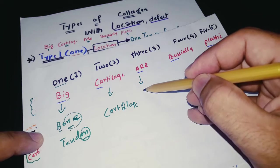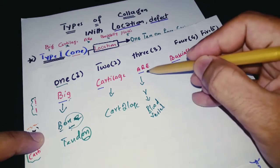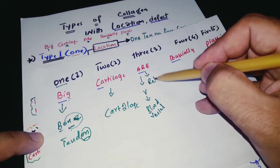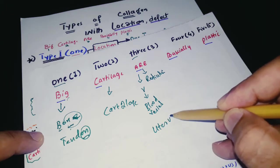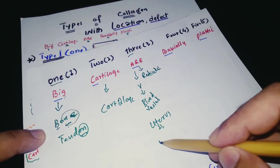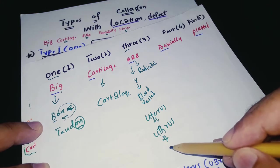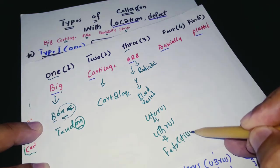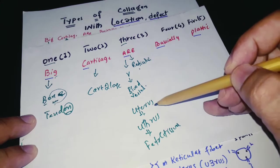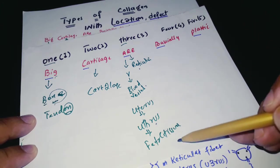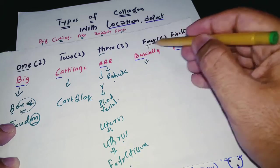From the letter 'A' in 'Are' — if you invert the A it becomes a V — that stands for blood vessels. The 'R' gives you Reticulin. The number three sounds like 'uterus,' and inside the uterus there is a fetus, so Type 3 collagen is present in blood vessels, reticulin, and fetal tissue of the uterus.